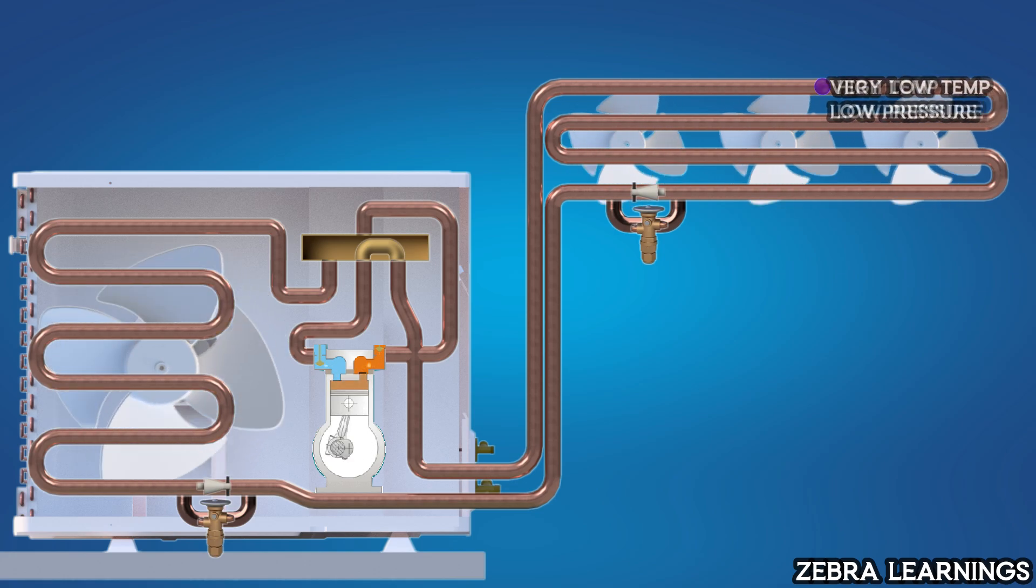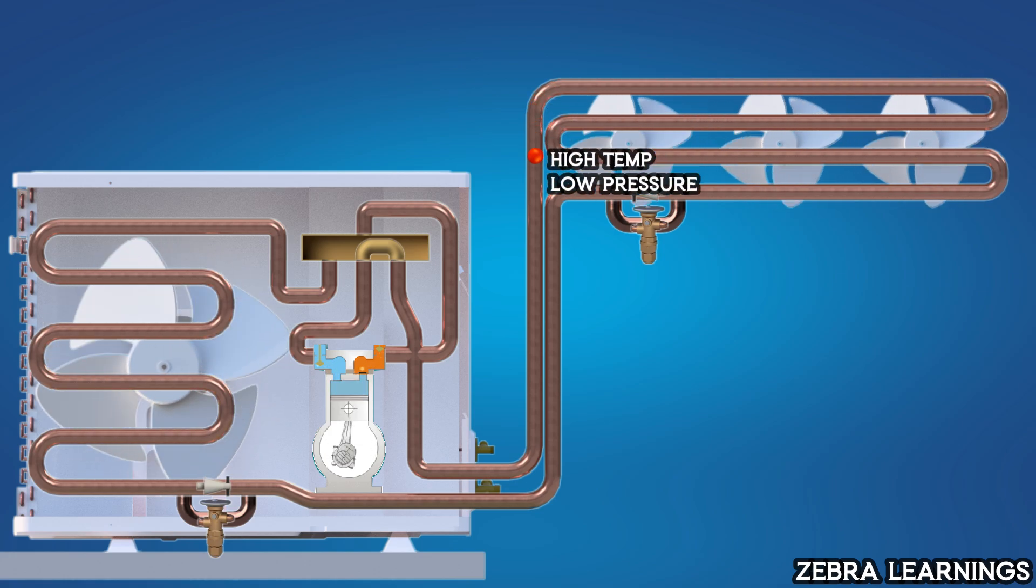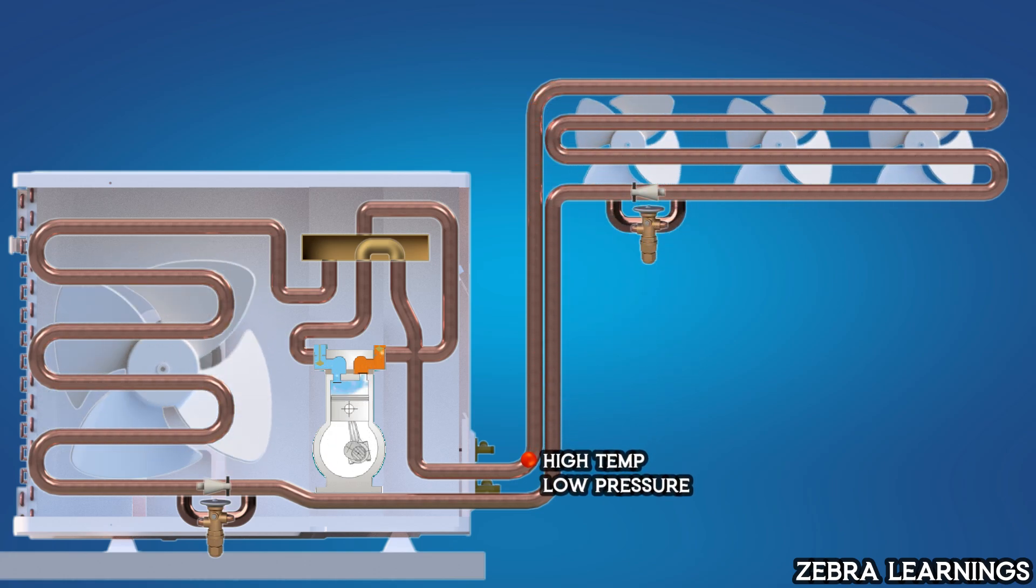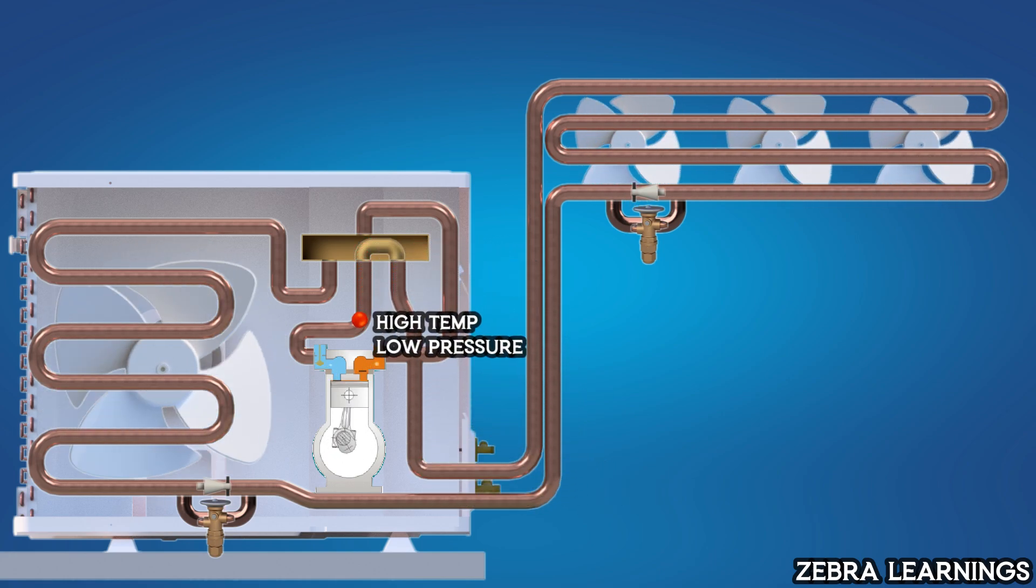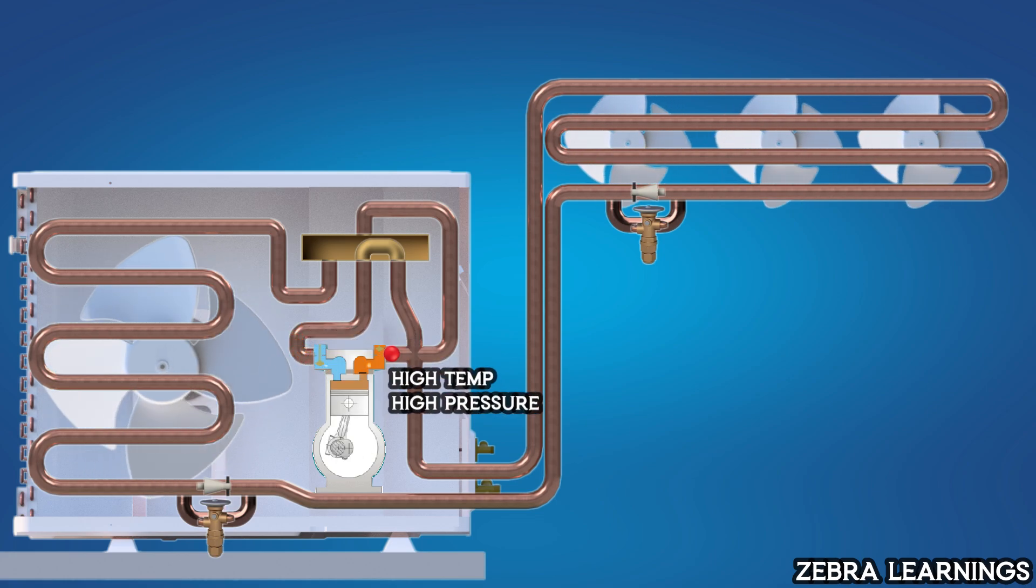As the refrigerant absorbs heat from the room, its temperature rises and it returns to the compressor, completing the cycle. This process continues in a loop, allowing the heat pump to function in cooling mode.